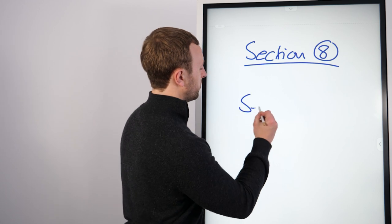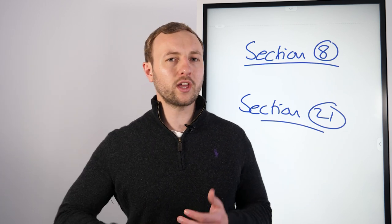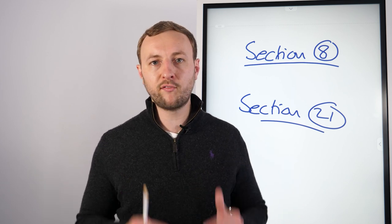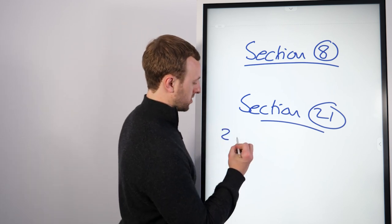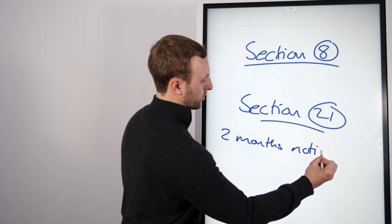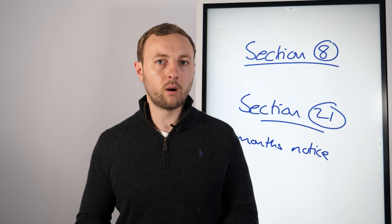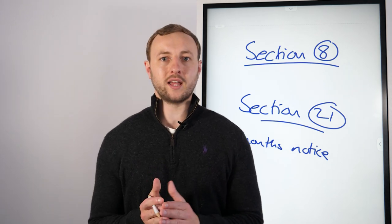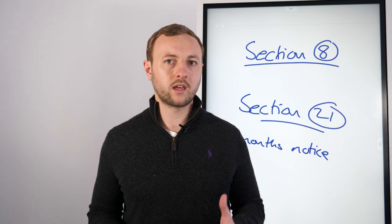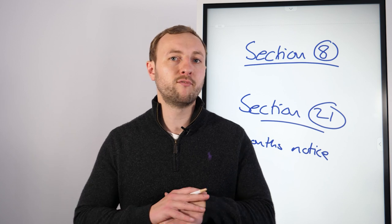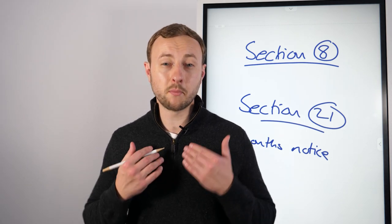With Section 21, you don't need any reason to issue it apart from the fact it's coming towards the end of your contract. A few key points: the tenant must have been in the property for a minimum of four months before you can issue a Section 21, and you must give two months' notice. I can't stress this enough — if you issue it too soon and they get the right advice, it can be voided. Once it's voided, you have to start again. So wait four months and give two months' notice.